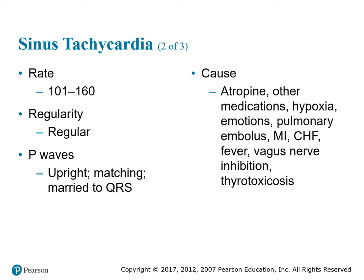Criteria for sinus tachycardia: your heart rate is anywhere from 101 to 160 beats per minute; your regularity is regular; P waves will still be upright, matching, and always married to the QRS. Causes include atropine or other medications, hypoxia, emotions, stress, pulmonary embolism, MI, CHF (congestive heart failure), fever, vagus nerve inhibition, and toxic thyroid.